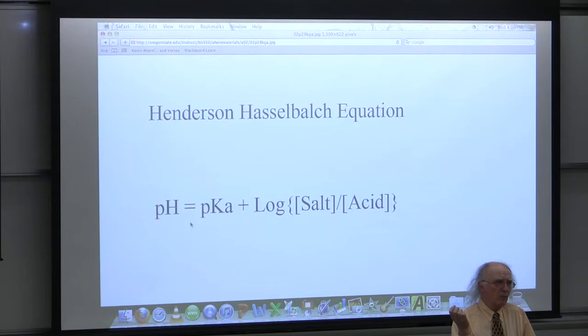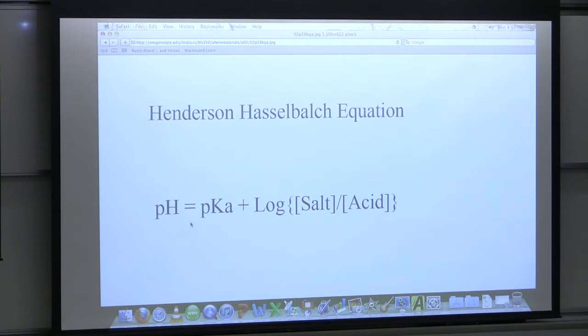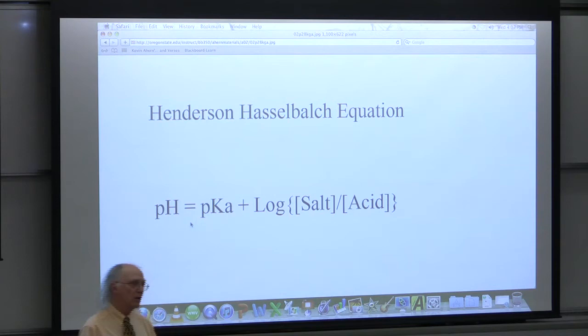If 50% of all the proteins in that solution have the proton off, then 50% of them don't work. If I have a 10-to-1 ratio of salt to acid, I know I've got 10 times as many proteins with one shape as the other. So knowing the relative amounts of proton-on or proton-off within an amino acid of a protein is very useful, because the number of molecules of an enzyme that are active in a cell is a factor in understanding how many reactions can occur. In fact, one of the ways cells control enzymes is by controlling how many active enzymes they have.